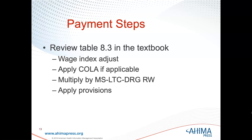For payment steps: remember the wage index adjustment is 66.2% versus 33.8%, not 75-25. Apply the COLA if applicable for high cost of living areas, then multiply by your MS-LTC-DRG and apply any provisions — and there are four of those provisions we just covered. Make sure you do your check your understanding questions, know all the colored key terms, and understand LTCH reimbursement — how it works, what the formula is, and how the wage labor adjustment is done.